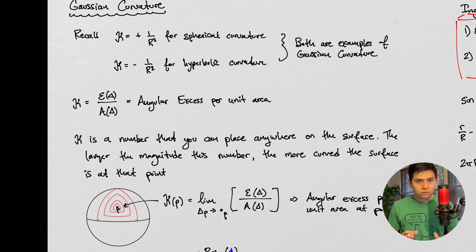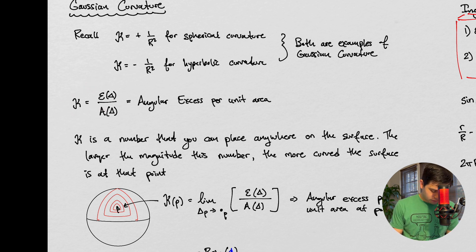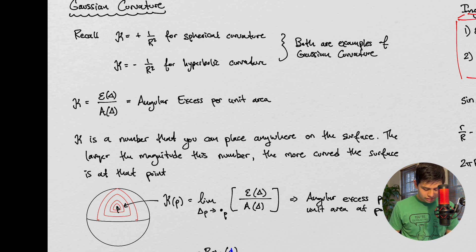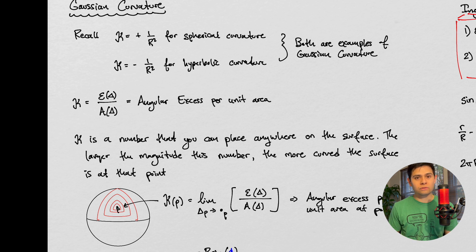We want to recall this concept: epsilon was related to the area times kappa. If we divide both sides by the area, we get another definition of this kappa value, and we can actually interpret this physically as the angular excess per unit area.